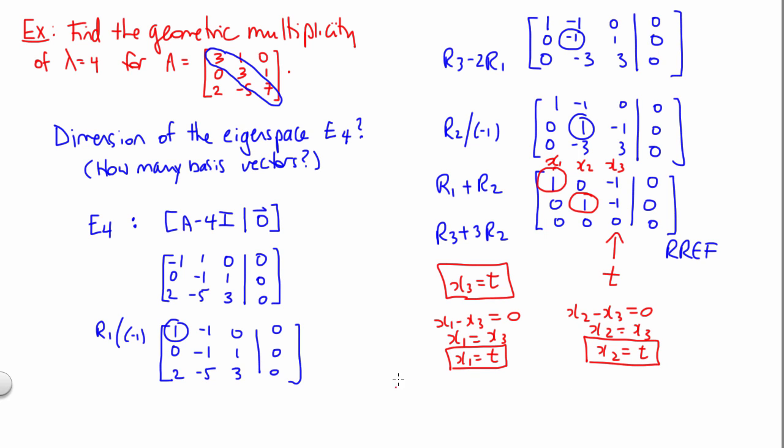So if we write down what our eigenvectors look like then, they have the form t, t, t, or we could rewrite that a little bit more nicely as x is equal to [1, 1, 1] times t, meaning our eigenvectors are the non-zero multiples of the vector [1, 1, 1]. Remember, technically the zero vector is not an eigenvector. So that's why I say non-zero multiples.